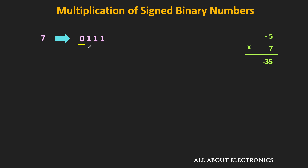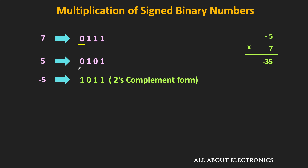For negative numbers, the 2's complement representation is different. To represent -5 in 2's complement form, first write +5 in 4-bit form, which is 0101. Then starting from the LSB, keep all bits as they are until you encounter the first 1. After that, replace all 0's with 1 and 1's with 0. So the 2's complement representation of -5 is 1011.